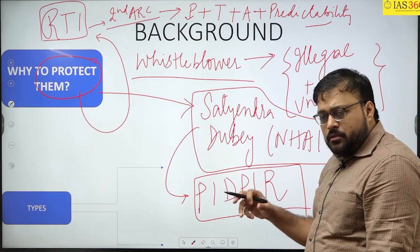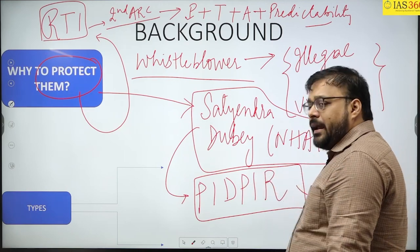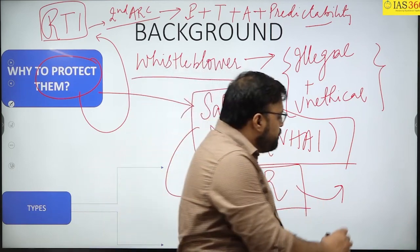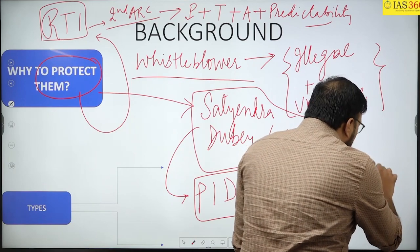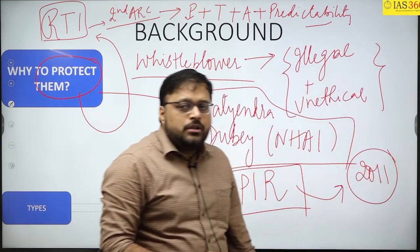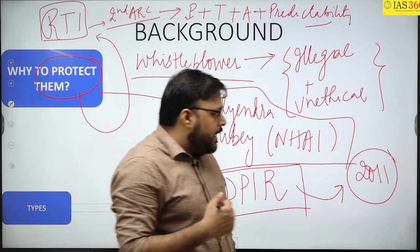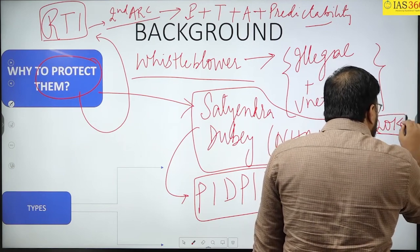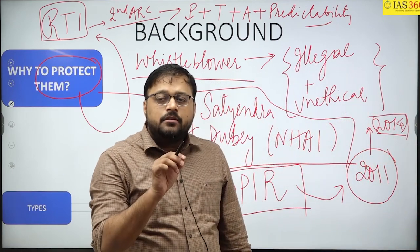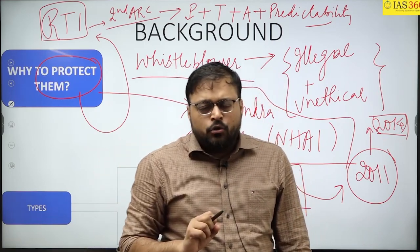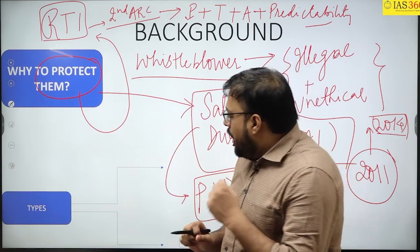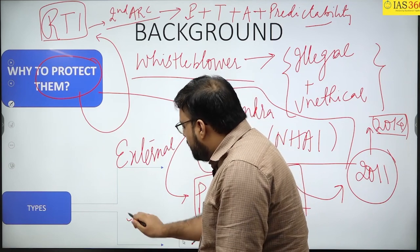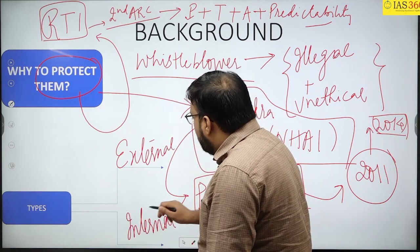After Satendra Dube's murder, there was a petition in court, and the court asked the government to take action. The government released a resolution called the Public Interest Disclosure and Prevention of Informer Resolution. After that, the Second ARC also suggested having a whistleblower act. In 2011 a bill was proposed, and in 2014 the Whistleblower Protection Act was passed. There are two types of whistleblowers: external and internal.